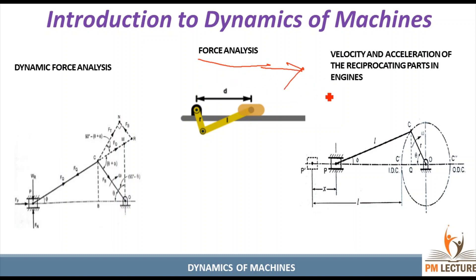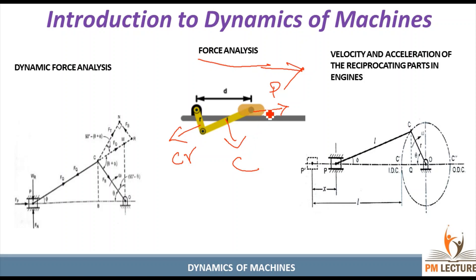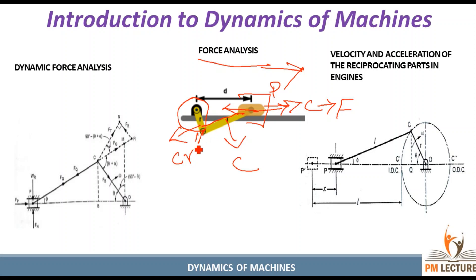We can identify the main components: the piston, the connecting rod, and the crankshaft. Inside the cylinder, combustion creates pressure. The piston will move, and through the connecting rod, the force is transmitted to the crankshaft. The crankshaft will rotate. In this simple mechanism, the engine will actually work.